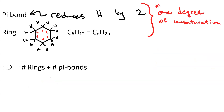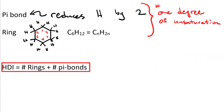It's useful to be able to calculate the HDI because you can just look at a chemical formula and determine the number of rings plus the number of pi-bonds.